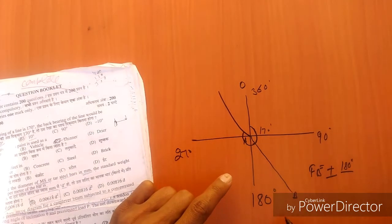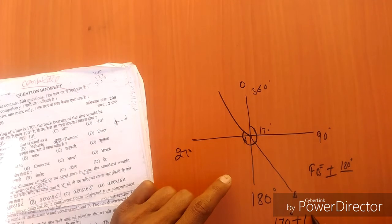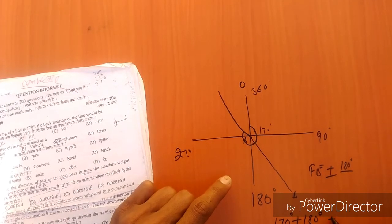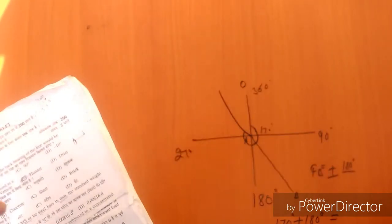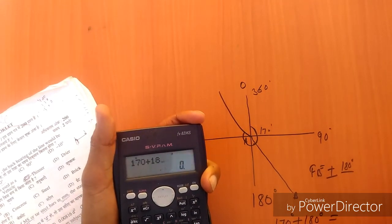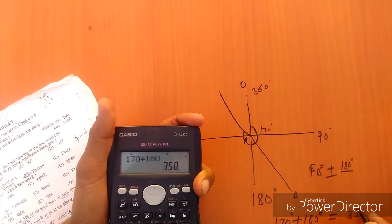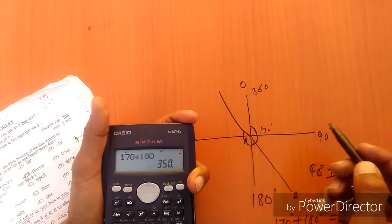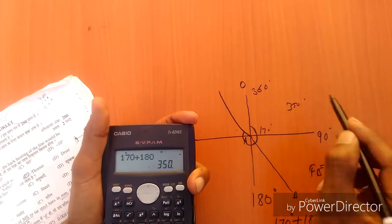So this is 170 degrees plus 180 degrees. That is equal to 170 plus 180, that is 350 degrees. The angle of the back bearing of this line is 350 degrees.